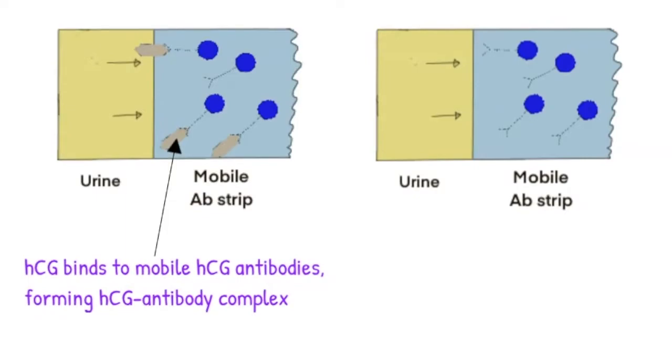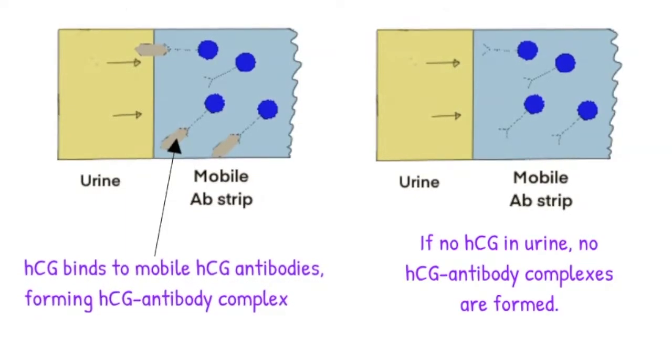If there are no HCG molecules in the urine, no binding occurs in this area. The urine then continues to move along the pregnancy test stick, taking any HCG antibody complexes with it. It also carries the free moving blue marked antibodies, which have not attached to HCG.